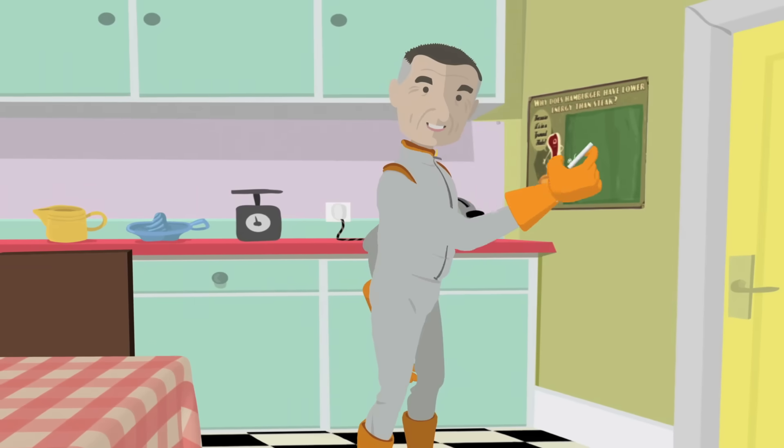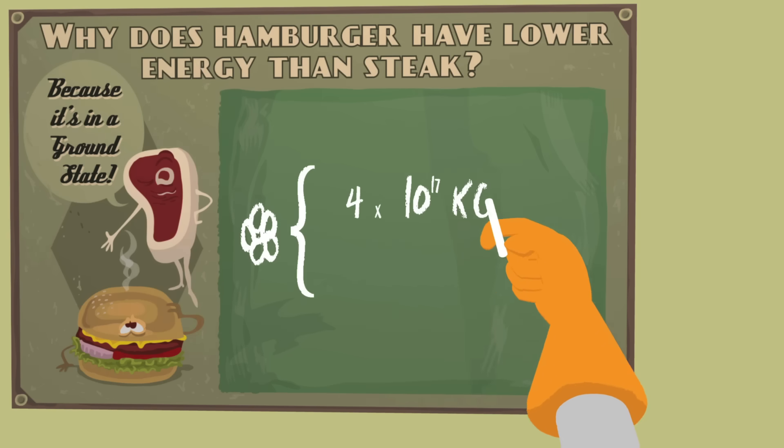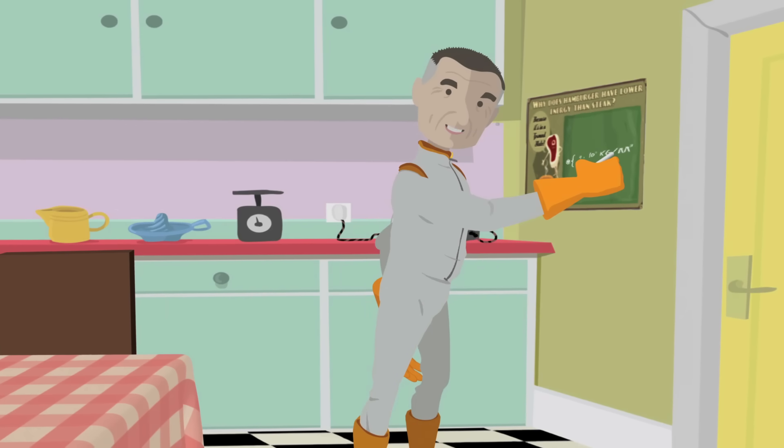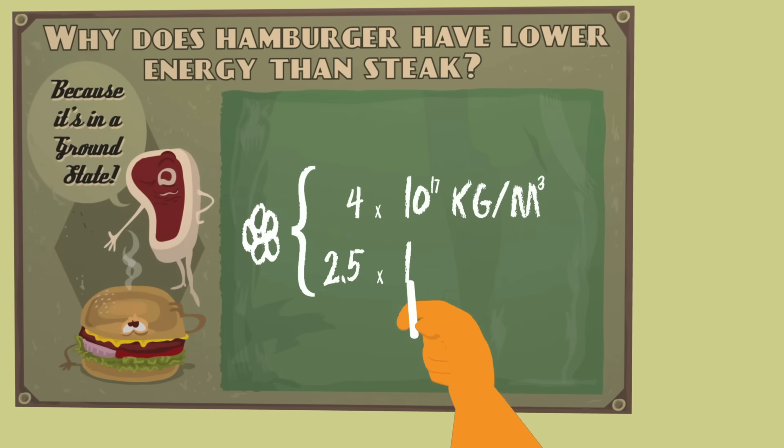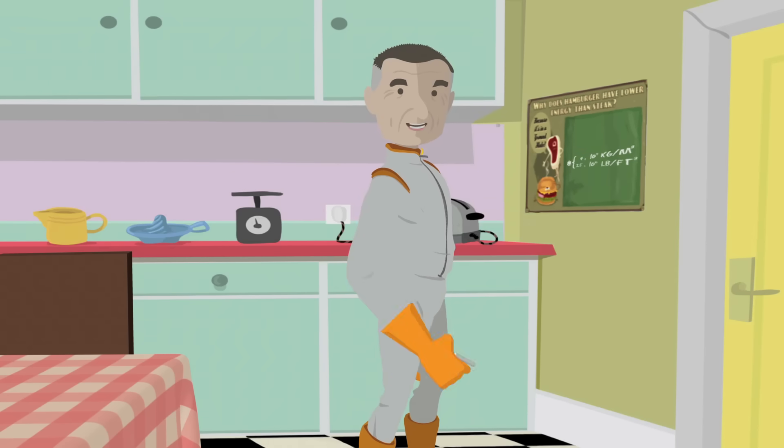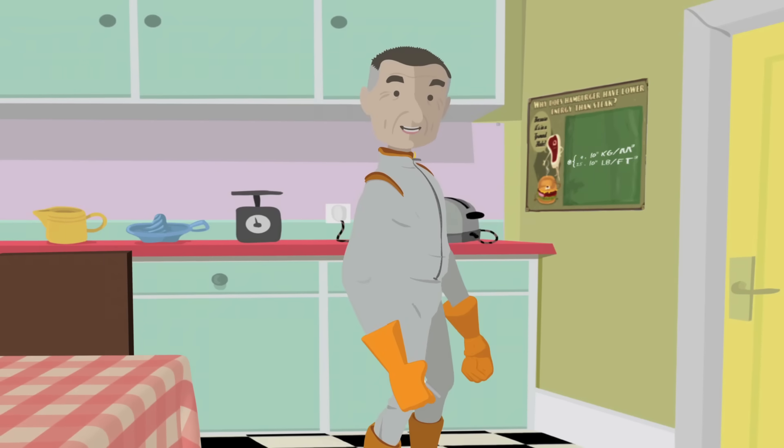The density of a typical nucleus is four times ten to the seventeenth kilograms per meter cubed. But that's hard to visualize. Okay, I'll put it in English units. 2.5 times ten to the sixteenth pounds per cubic foot. Okay, that's still kind of hard to figure. Okay, here's what I want you to do.